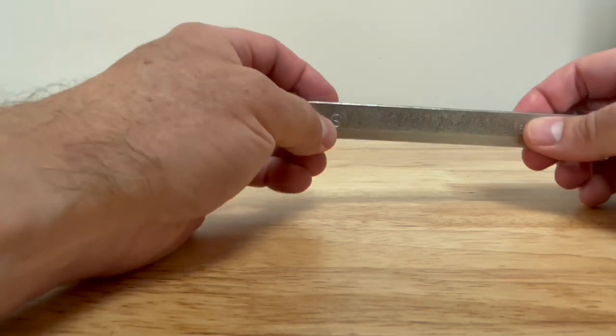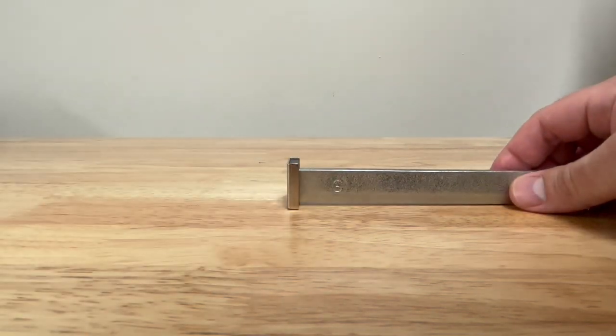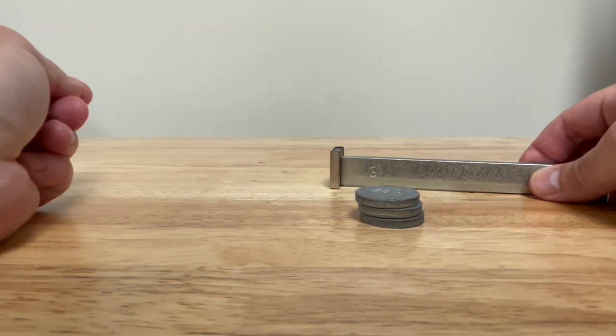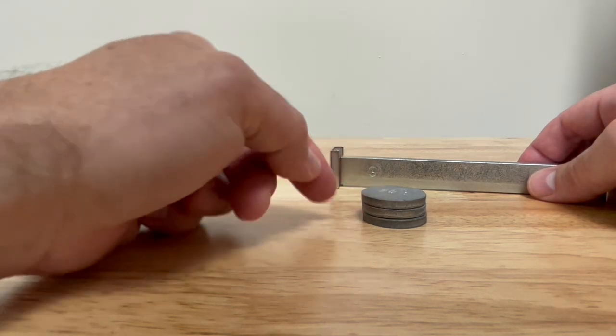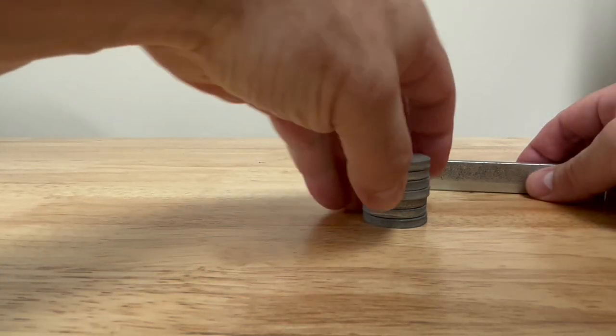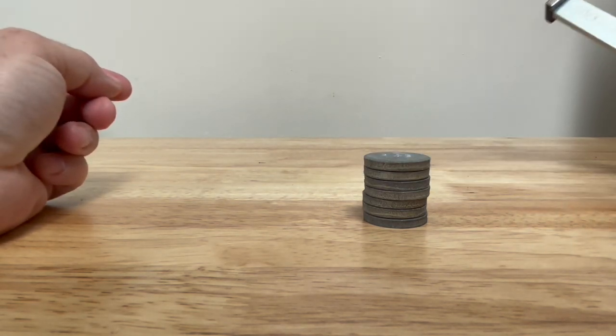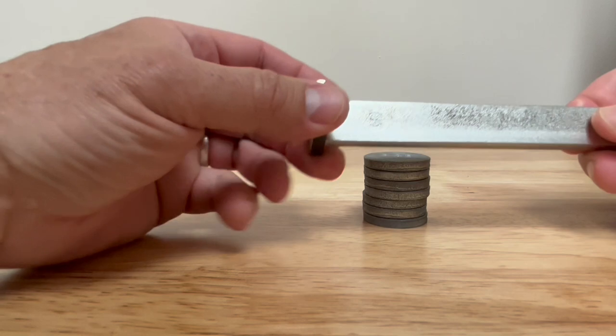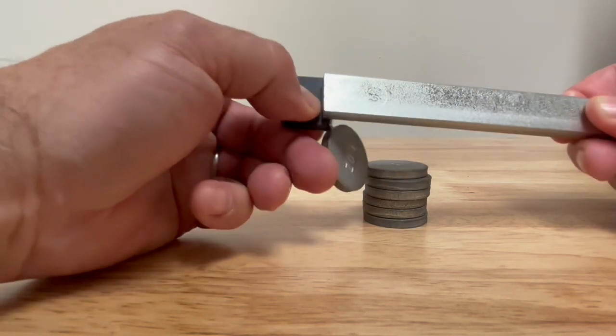And I was able to get this to go from being able to lift three ounces of steel taped together to lifting seven ounces of steel taped together. So more than doubled the strength of it just by putting these ceramic magnets on the ends for a little while.